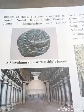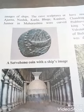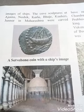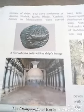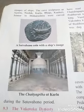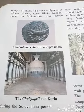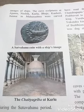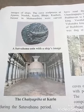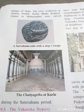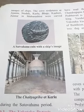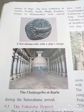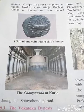The cave sculptures at Ajanta, Nasik, Karla, Bhaja, Kanheri, and Junar in Maharashtra were carved during the Satvana period. 'To carve' means to shape a statue out of stone. You can see the picture of the Chaitya Griha at Karla.